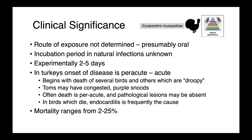Oftentimes it begins simply with the death of several birds while others appear droopy and unwell. The toms — the male turkeys — can have congested and purple snoods. Death can oftentimes occur so rapidly that we don't actually have time for pathological lesions to develop, so a post-mortem examination of the bird may be really unrewarding.